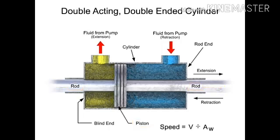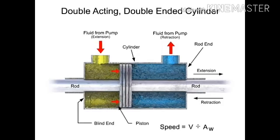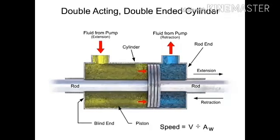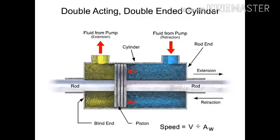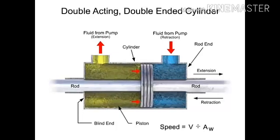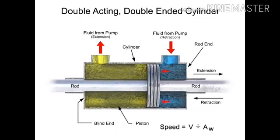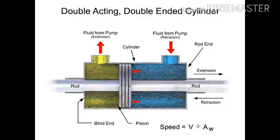Double-ended cylinders work similarly to single-ended, but are used when a constant speed is required for both the extension and retraction strokes. Since the flow rate is the same and the piston areas are the same, the speed for extension and retraction is also the same.